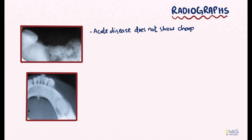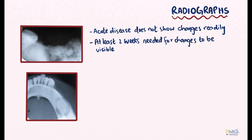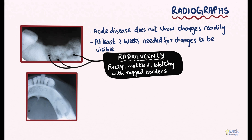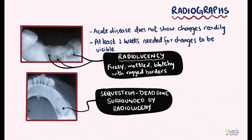Under radiograph, acute suppurative osteomyelitis does not show any changes readily; it takes at least two weeks for changes to be noticeable. The acute disease shows radiolucent changes that are fuzzy, mottled, and blotchy with ragged borders. When the disease becomes chronic, dead bone tissues or sequestra are visible in the radiograph as radiopaque masses surrounded by fuzzy or blotchy radiolucencies.